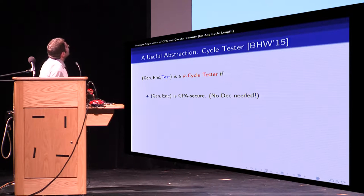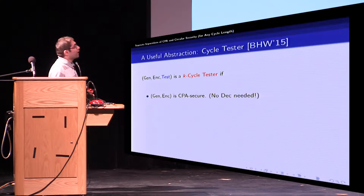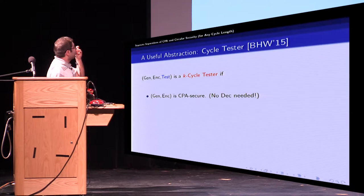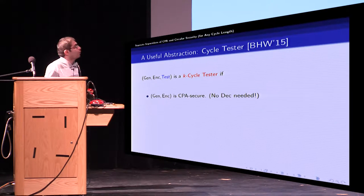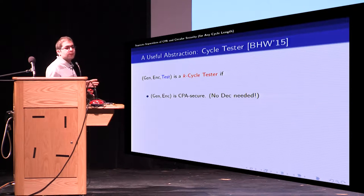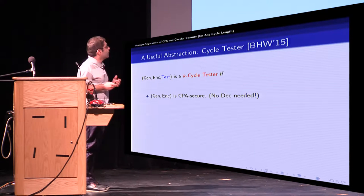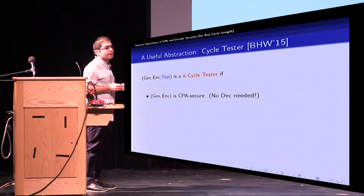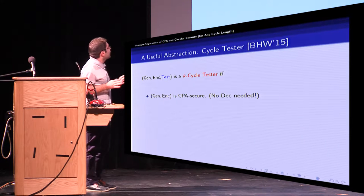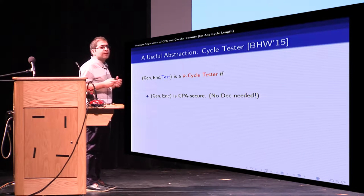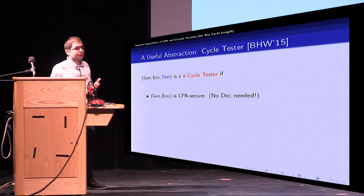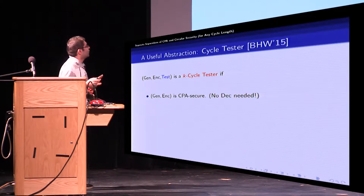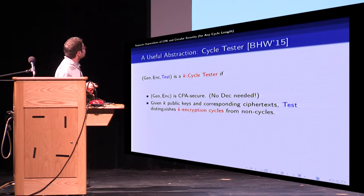Before going into the construction let's see a useful abstraction which is called cycle tester and introduced by Bishop, Hohenberger and Waters. We say that the tuple of randomized algorithms gen, enc and test together is a cycle tester when gen and enc is CPA secure.